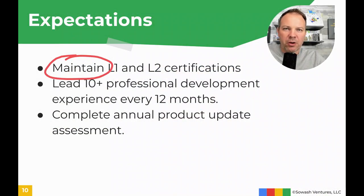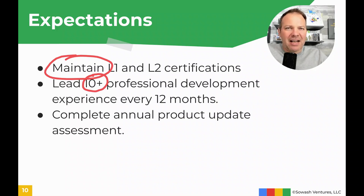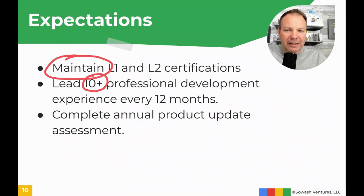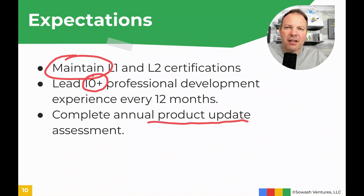Once you become a trainer, there are some ongoing requirements. You must maintain your Level 1 and Level 2 certifications — those need to be renewed every three years. You must lead a minimum of 10 professional development experiences every year. The definition of that is very loose: it can be coaching, speaking at a conference, podcasting, blogging, YouTube videos. Google is very lenient on what qualifies as an experience. And once a year, you'll need to complete the annual product update, which tests your knowledge of the latest updates to Classroom, Drive, Gmail, and so on.